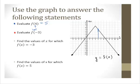Evaluate f(−3). If my input is negative 3, what is my output? Negative 5. F(−3) = −5.